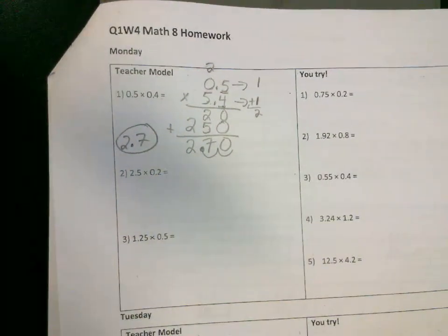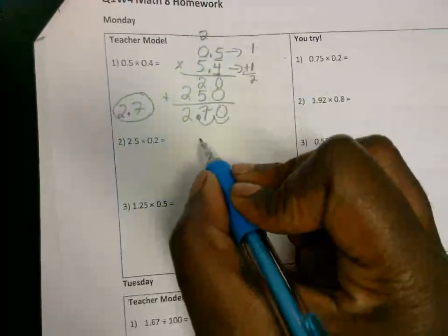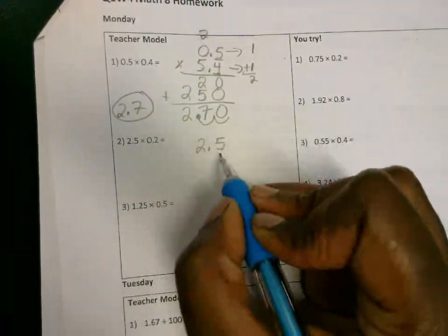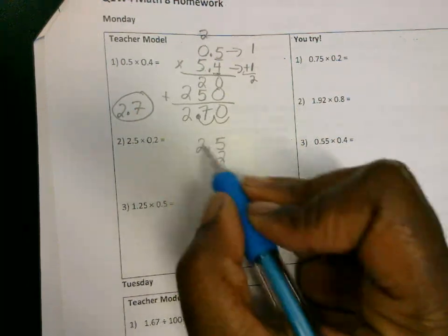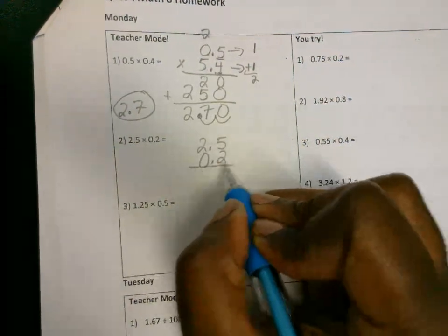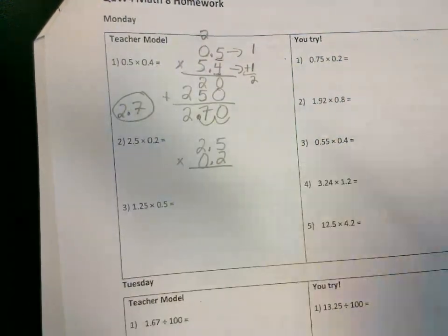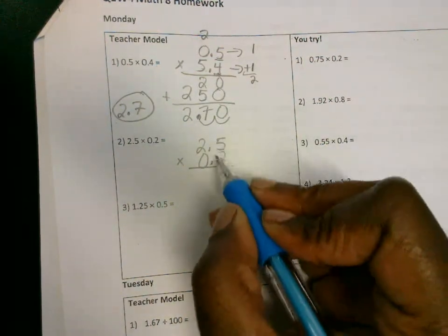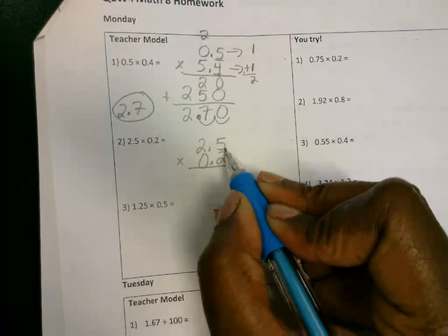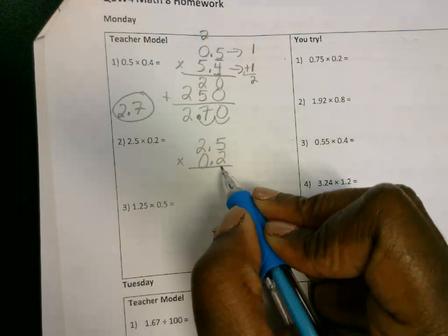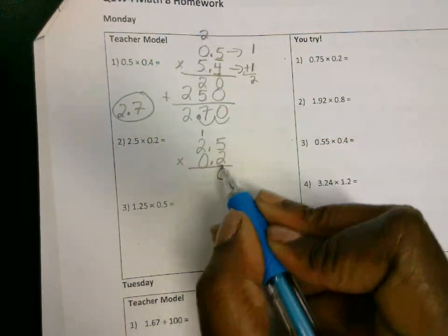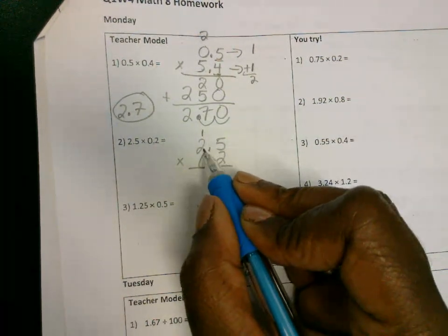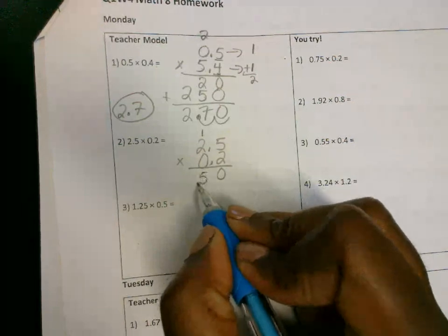Now let's multiply number two. Line up by the number, not the decimal. The two goes under the five, the zero goes here. It just so happens the decimals are also lined up, but they don't have to be. The numbers have to be lined up. Two times five is going to give me 10. Then two times two is four, plus one is going to be five.